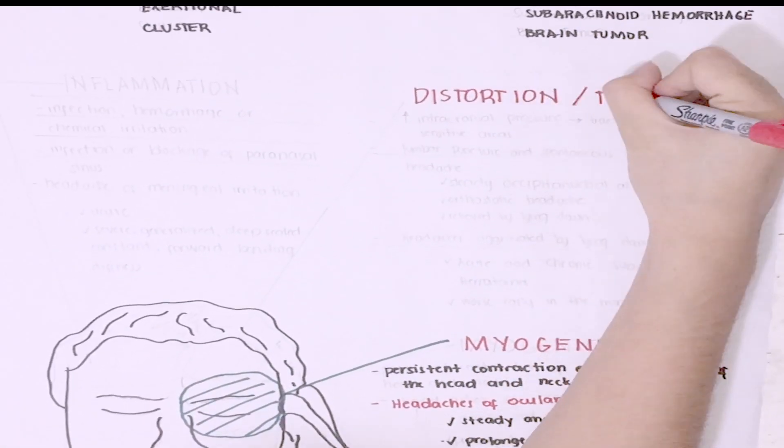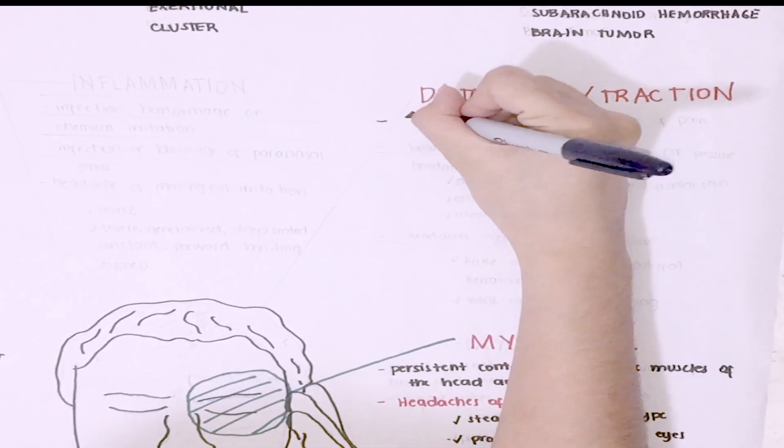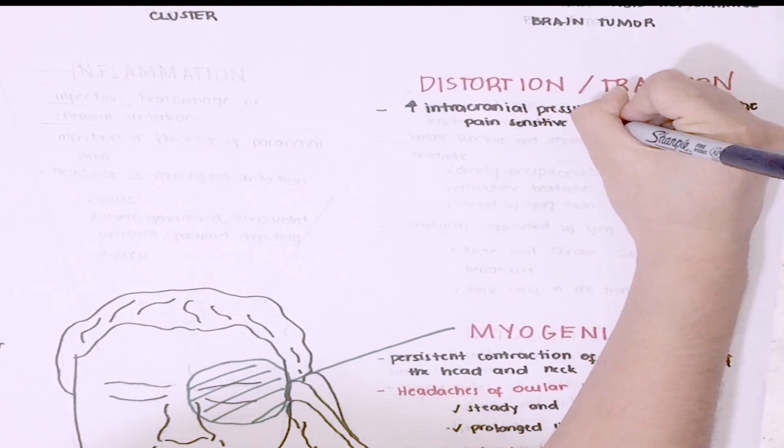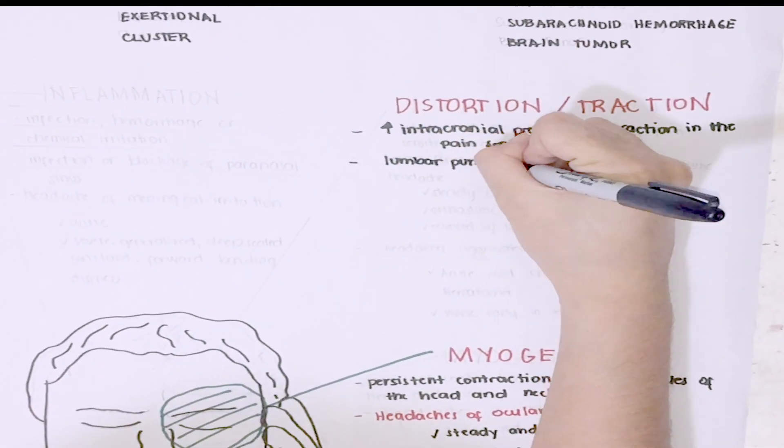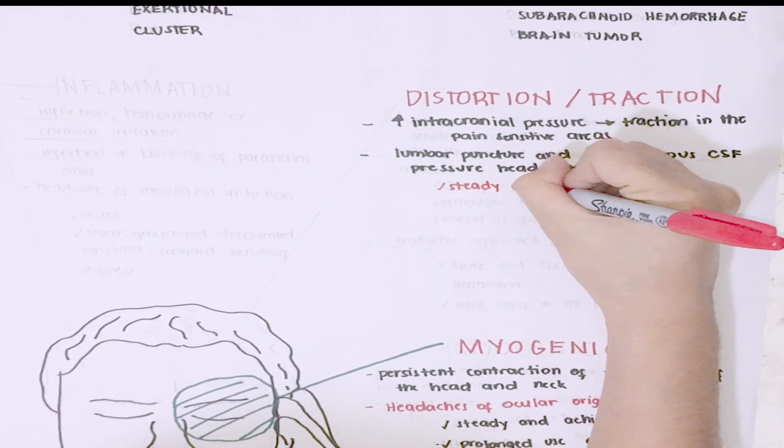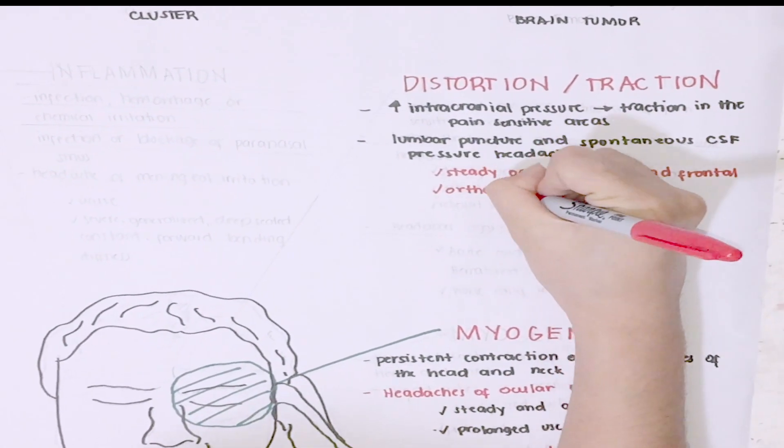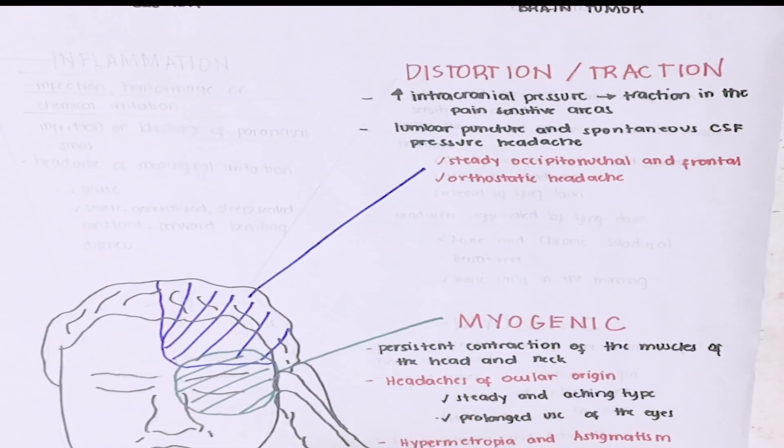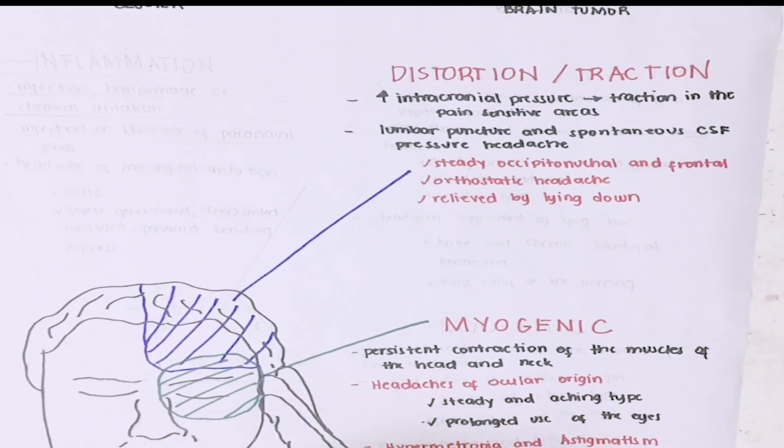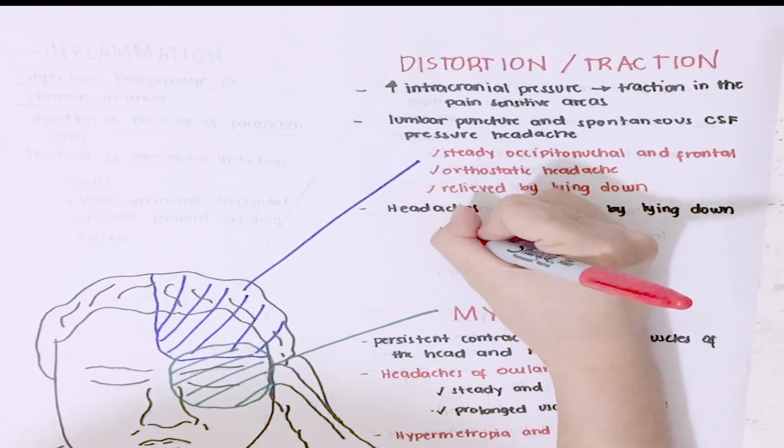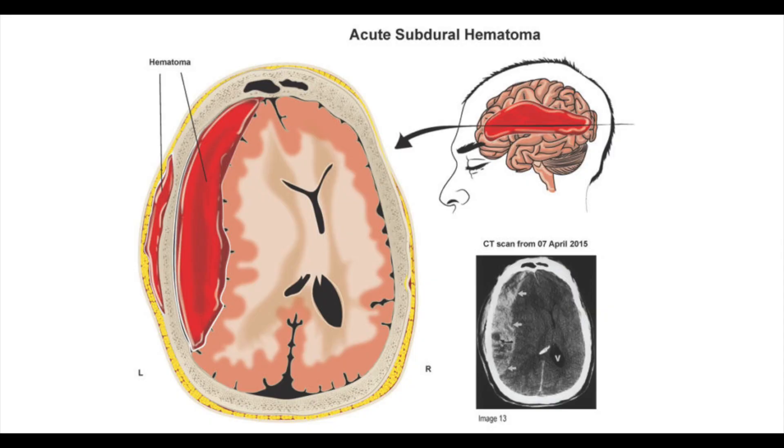Distortion or traction. This is mainly due to increase in intracranial pressure, resulting in traction of pain-sensitive areas. Examples are lumbar puncture and spontaneous low CSF pressure headache. It is a steady occipital, nuchal, and frontal pain. It happens within few minutes after arising from recumbent position and is relieved by lying down. Headaches that are aggravated by lying down or lying on one side occur with acute and chronic subdural hematoma. They are dull and unilateral and worse early in the morning.